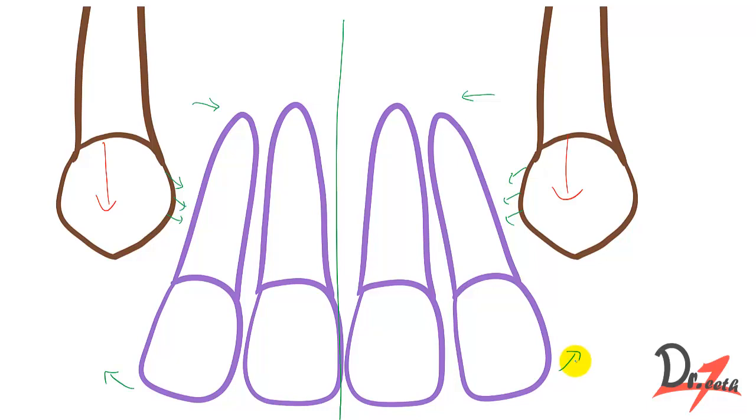The second thing that happens is this shifted root of the lateral incisor will again press upon the roots of the central incisor. It will apply pressure on the roots of the central incisor. The same thing will happen with the root of the central incisor as well.